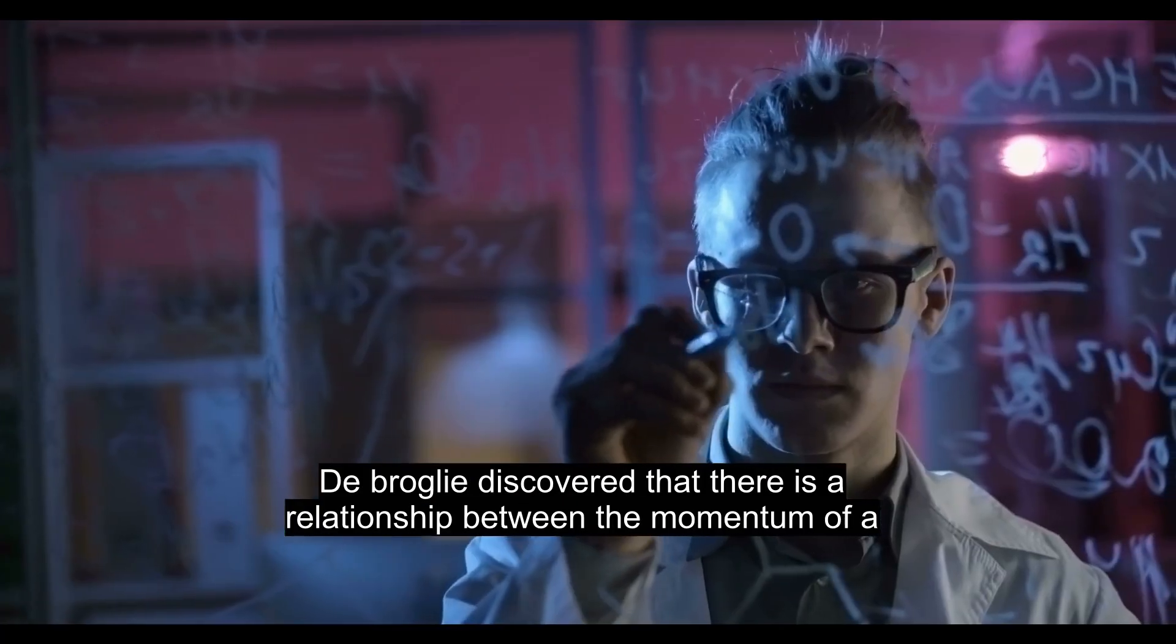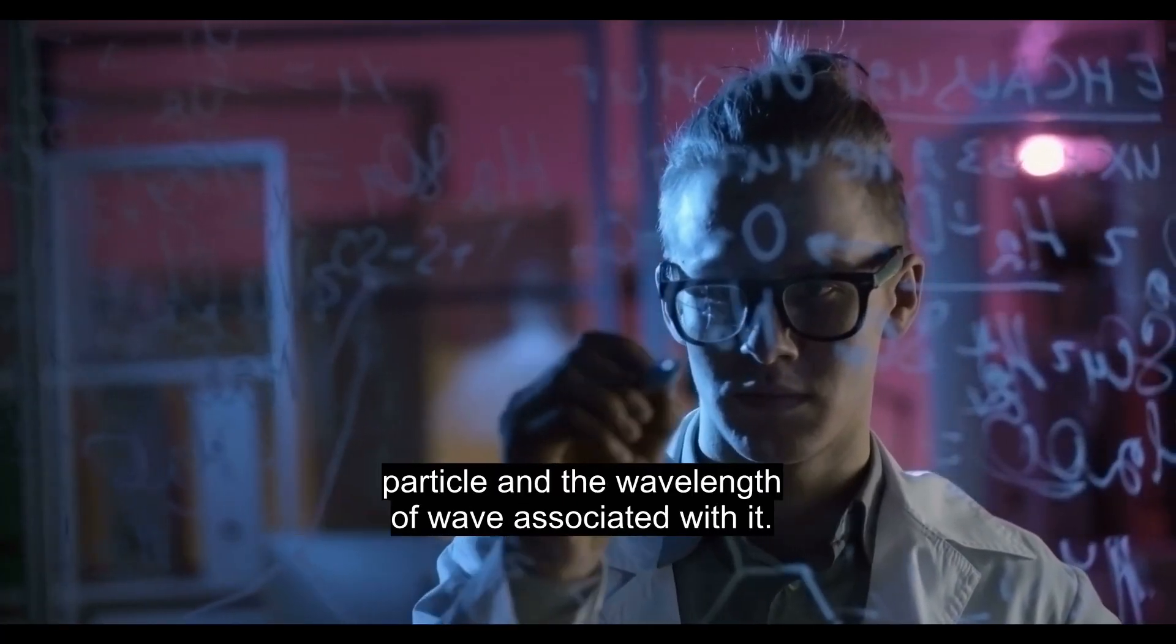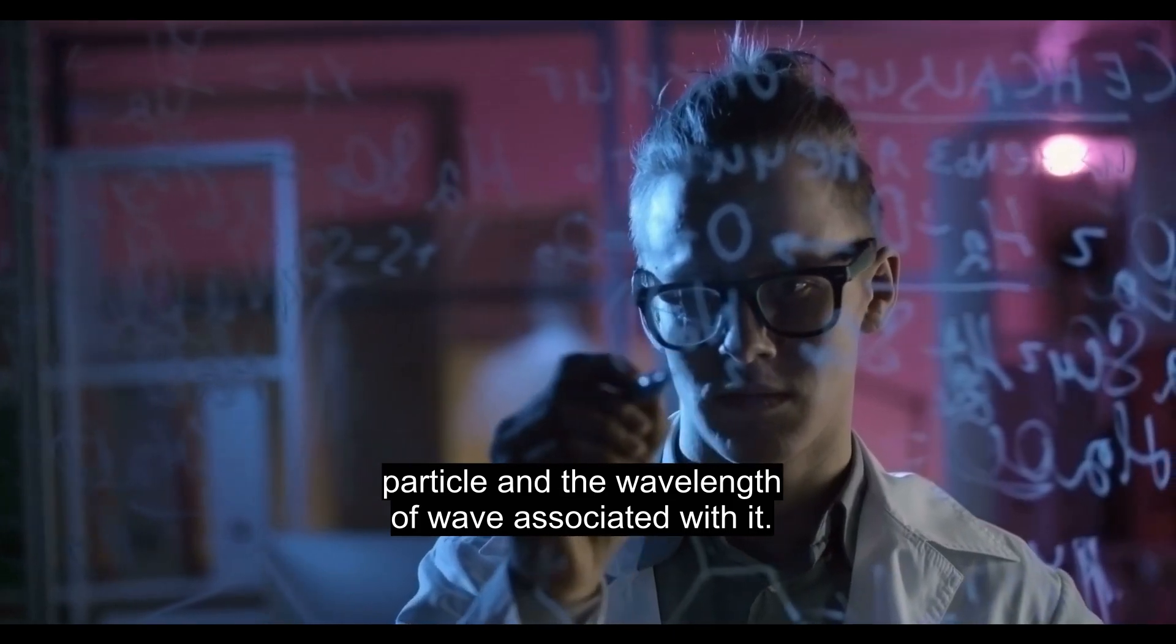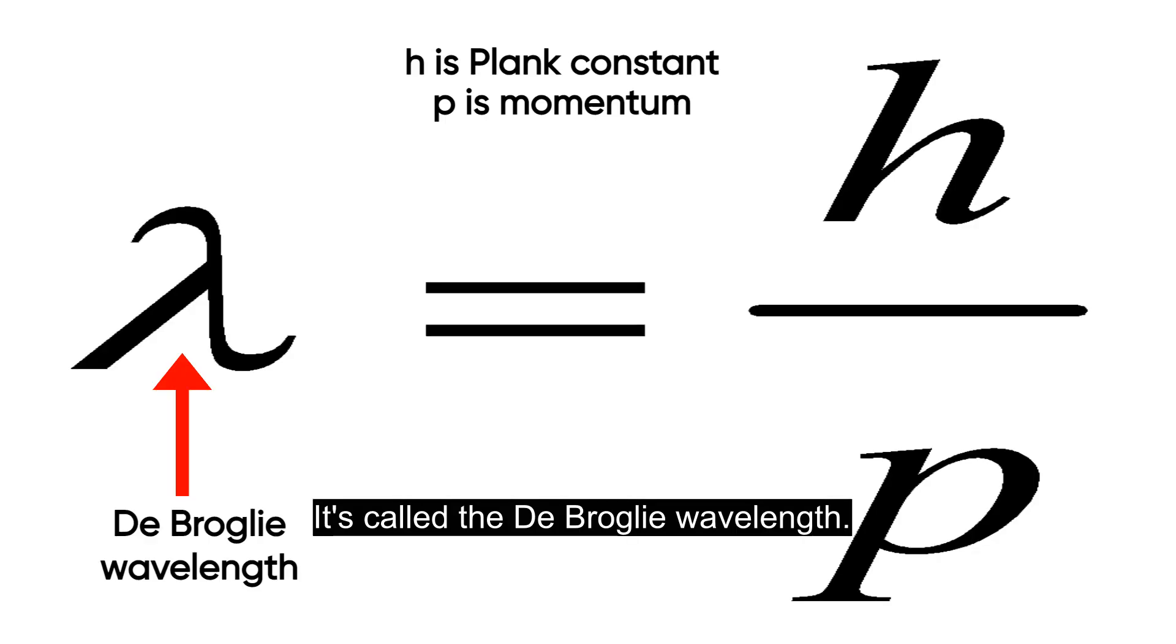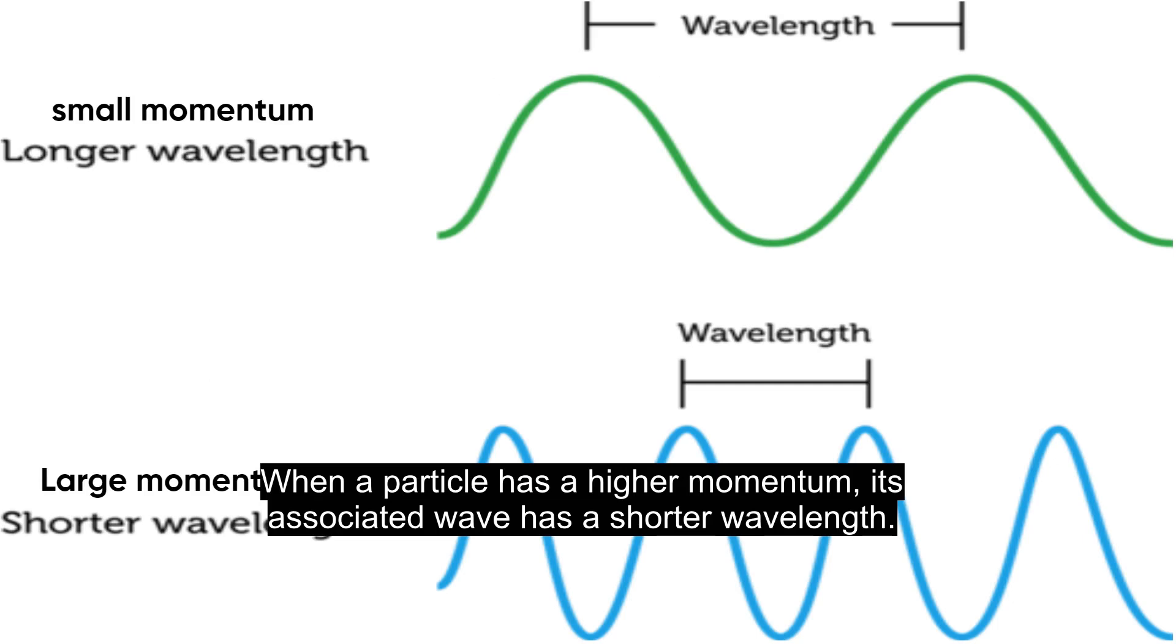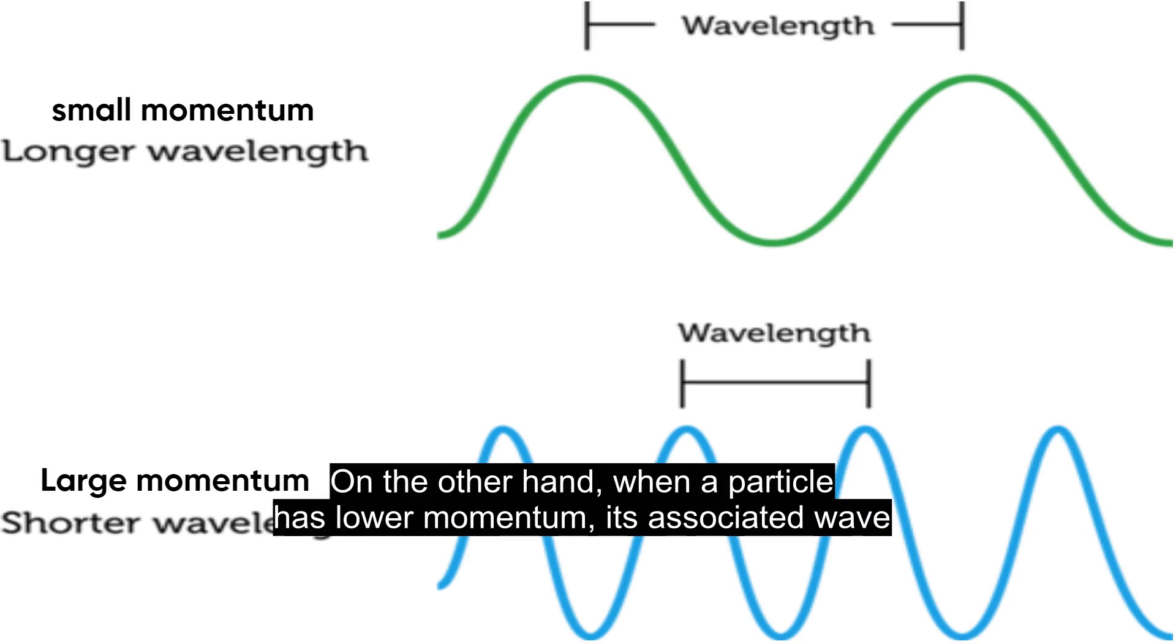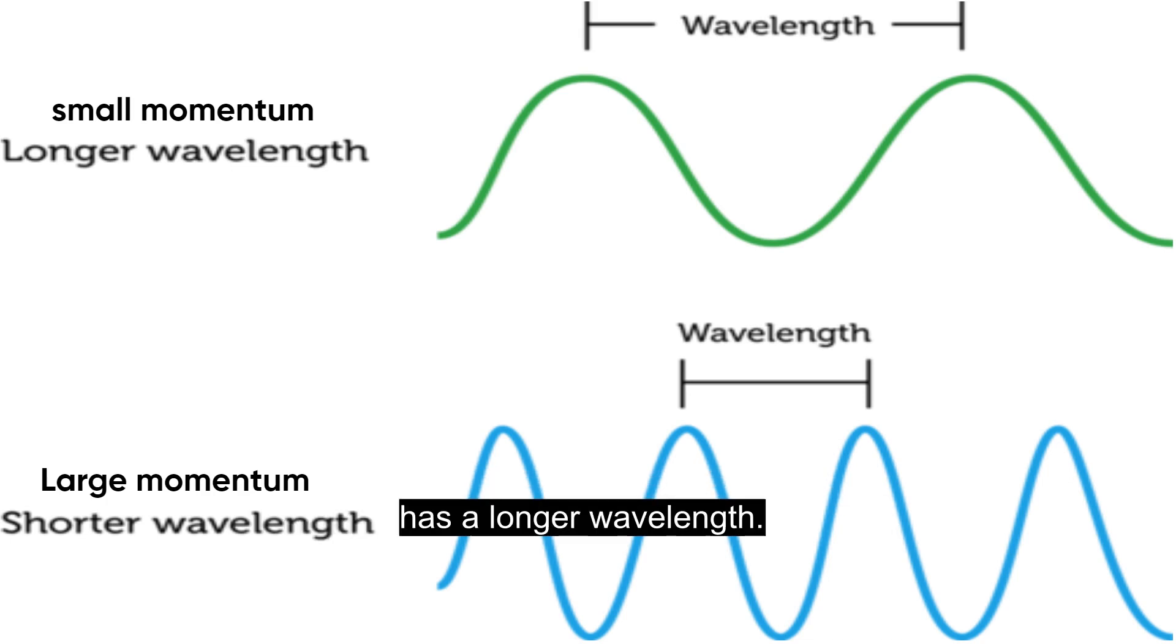De Broglie discovered that there's a relationship between the momentum of a particle and the wavelength of wave associated with it. It's called the de Broglie wavelength. When a particle has a higher momentum, its associated wave has a shorter wavelength. On the other hand, when a particle has lower momentum, its associated wave has a longer wavelength.